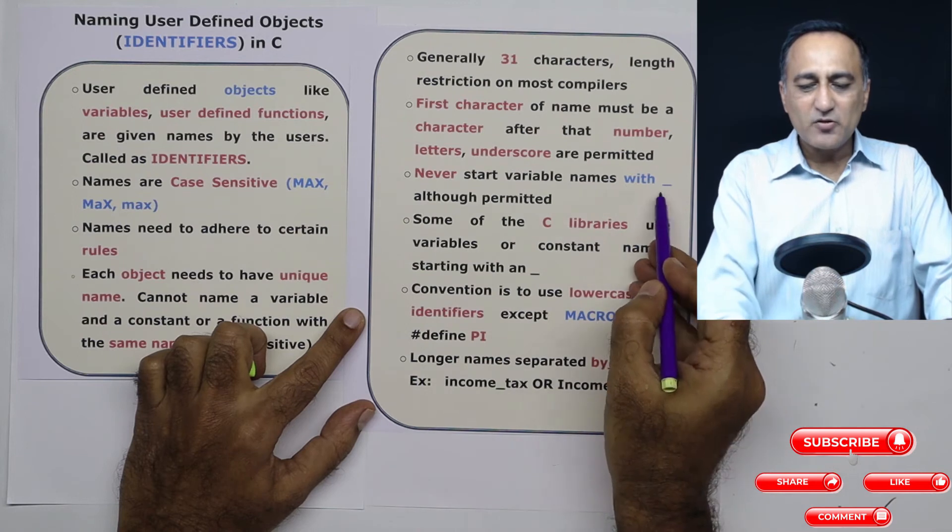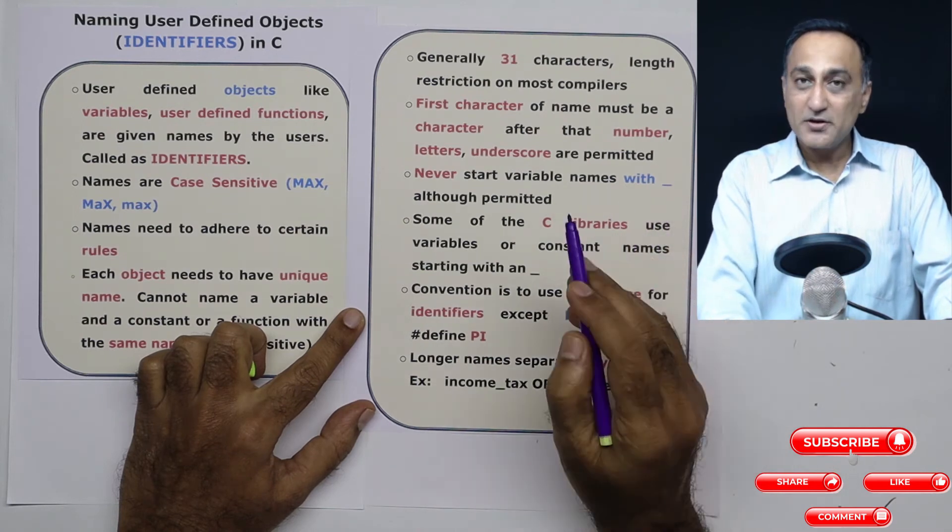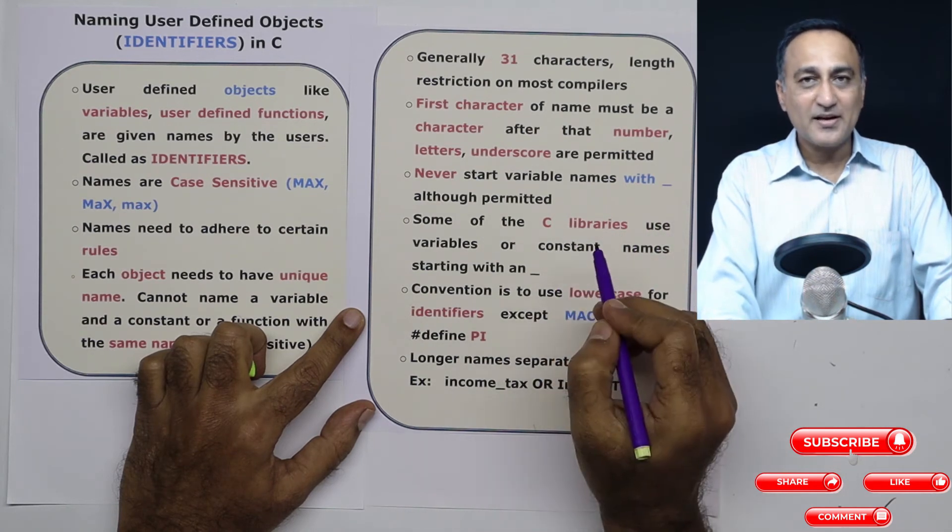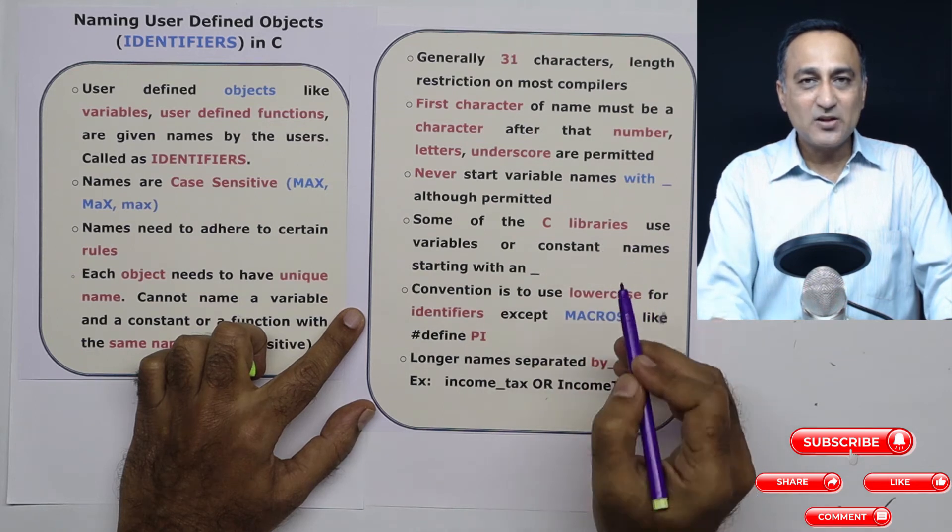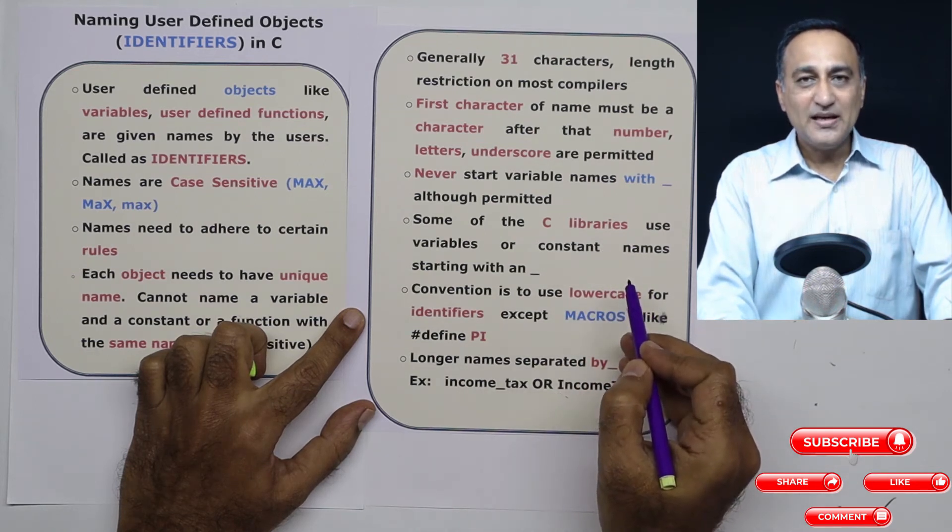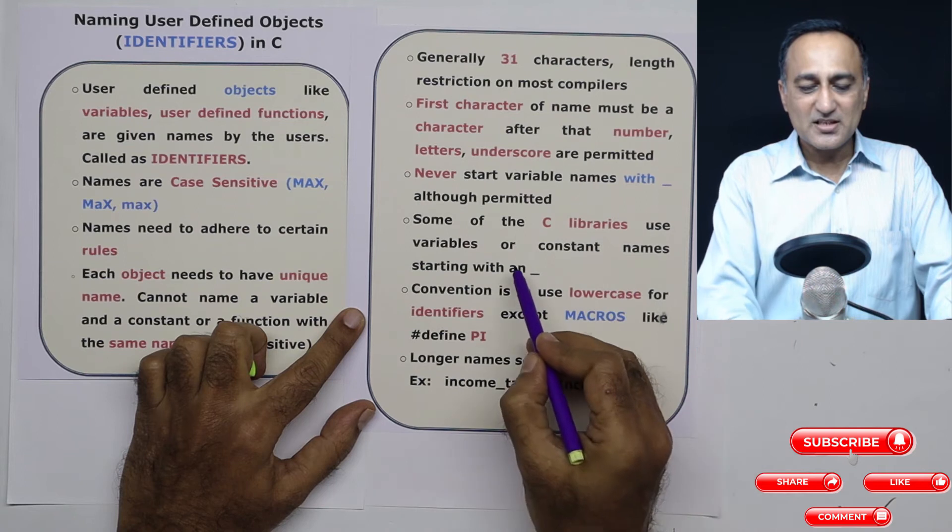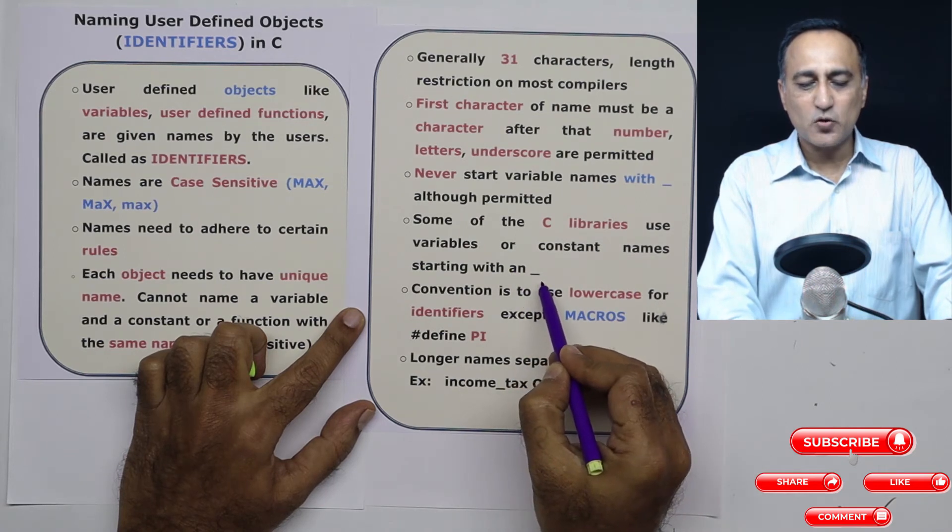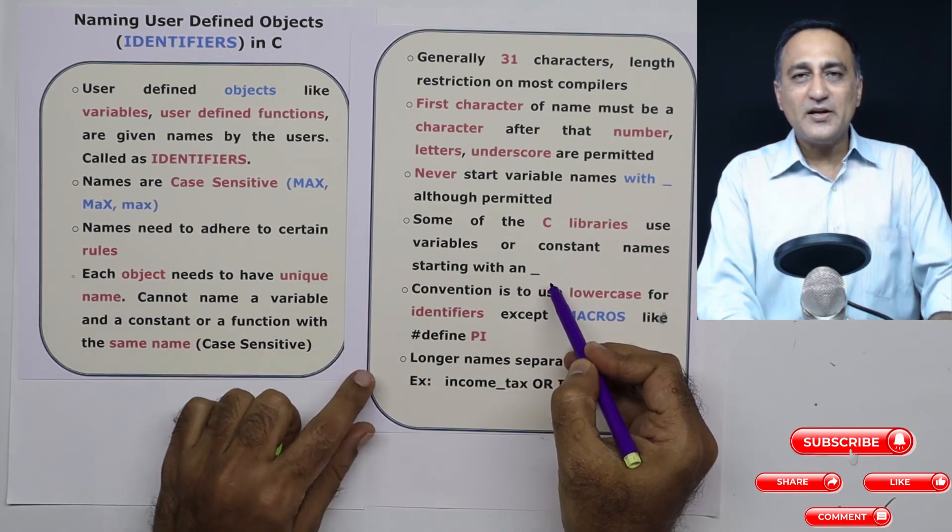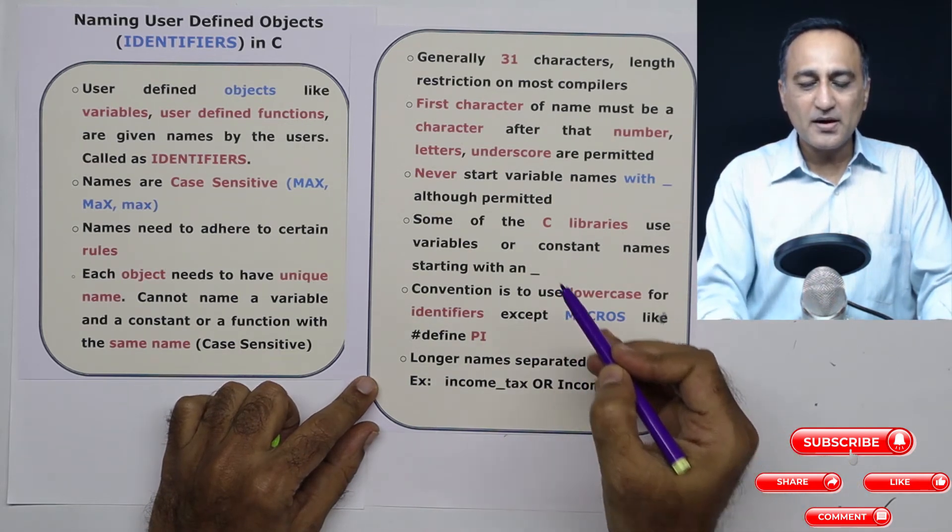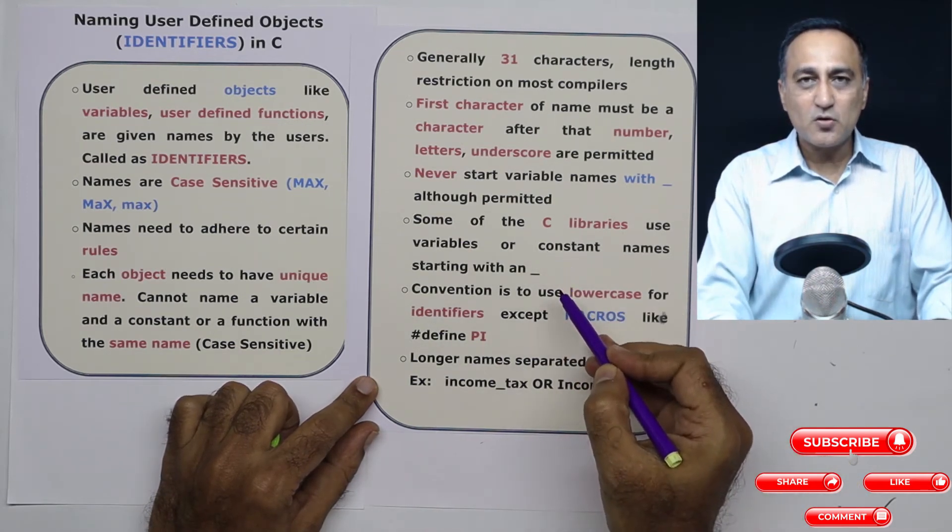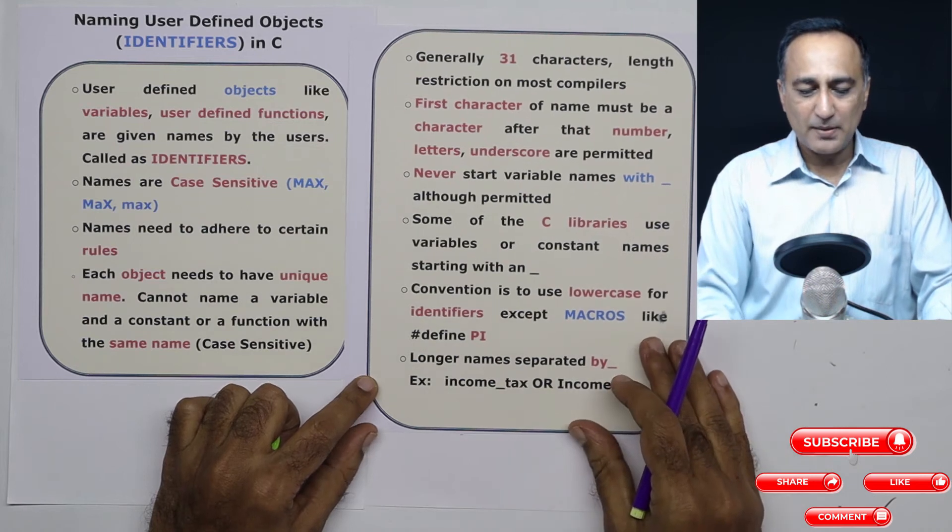You can start a variable name with an underscore, although it's allowed in C, but it's not a great idea. Because a lot of C library functions name their own variables starting with the underscore. This can lead to a problem when you're debugging or examining your code. You may get confused which is your code and which is the code of C library.